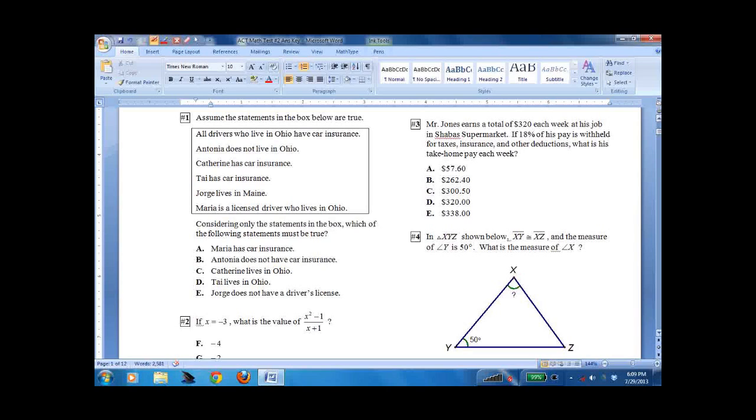Number one, assume the statements in the box below are true. You can read them. And then consider only the statements in the box, which of the following statements must be true. Now this is a bit about logic, and there are certain rules for logic, but you can just go through the answers and work this one out. So Maria has car insurance, and the big one here is all drivers who live in Ohio have car insurance. Well, that doesn't mean that if you have car insurance, you live in Ohio.